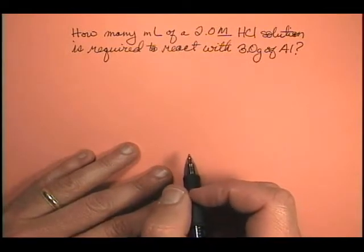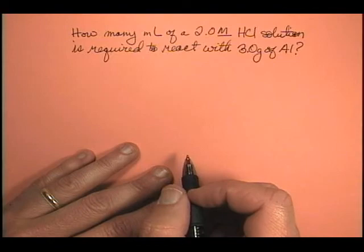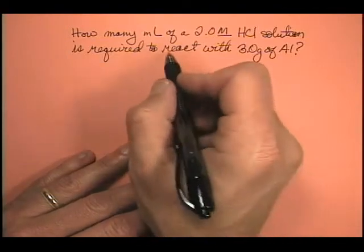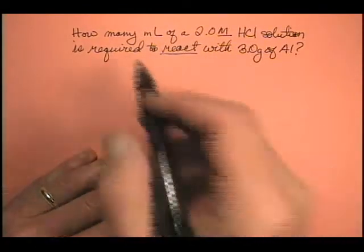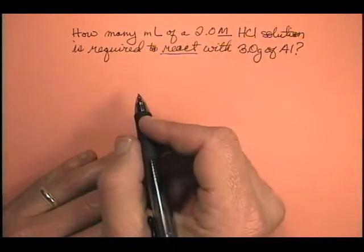Now right away, that little red flag goes up and says there's a key word in here that tells me I need something that's not provided. React. I know I'm going to need a balanced equation because it says HCl is reacting with aluminum.